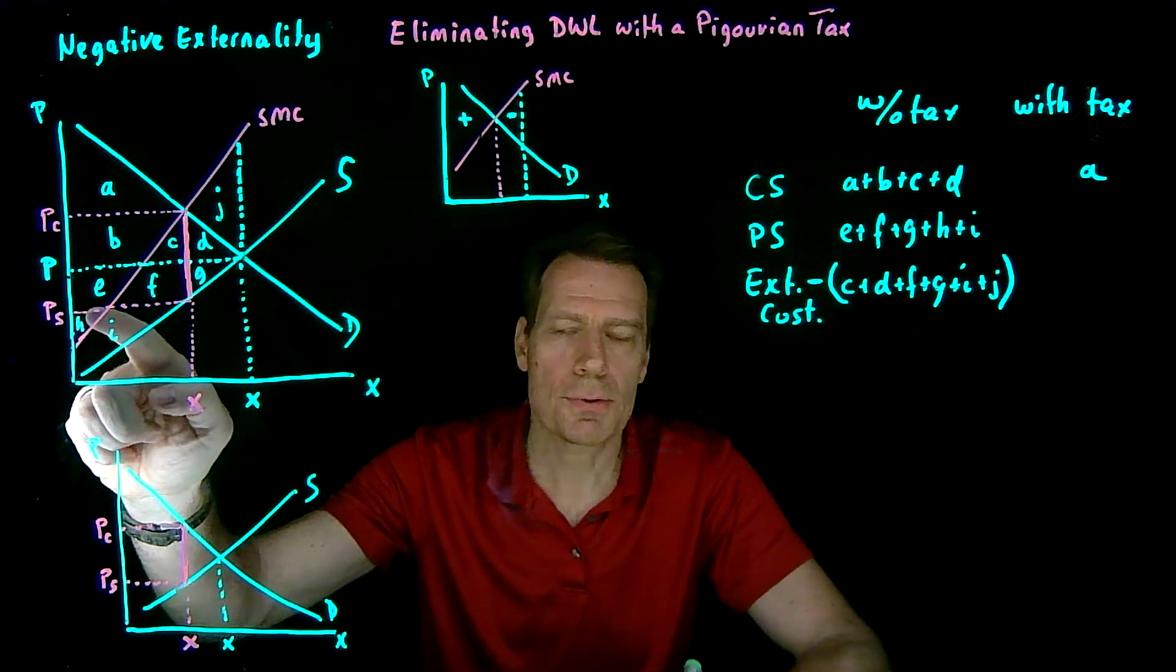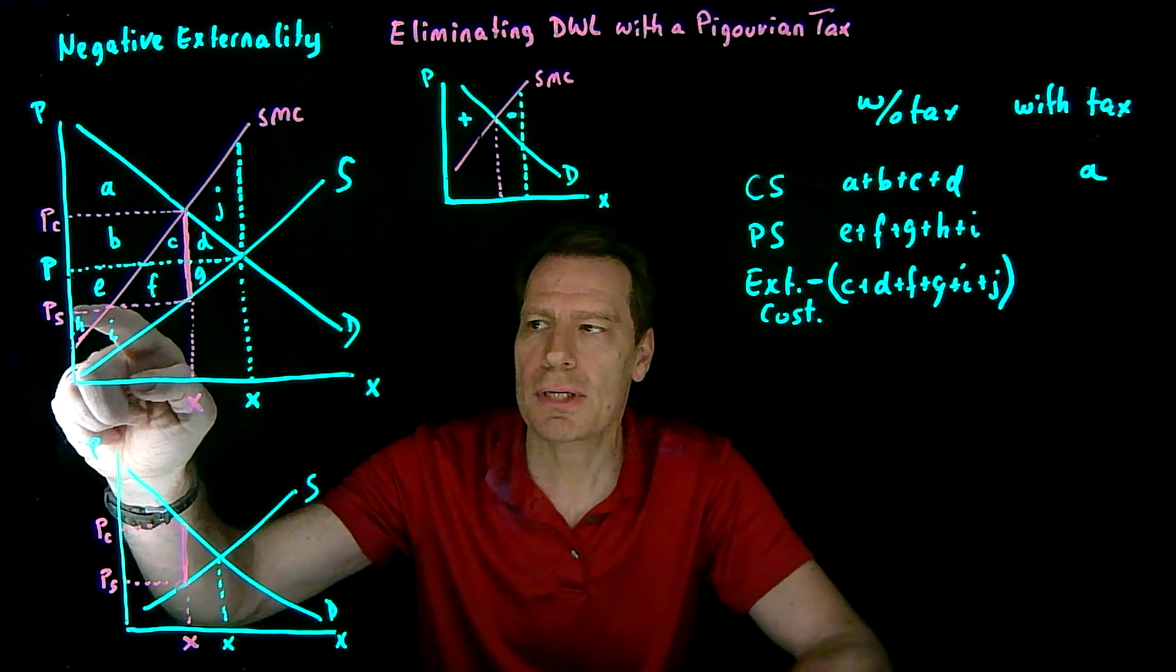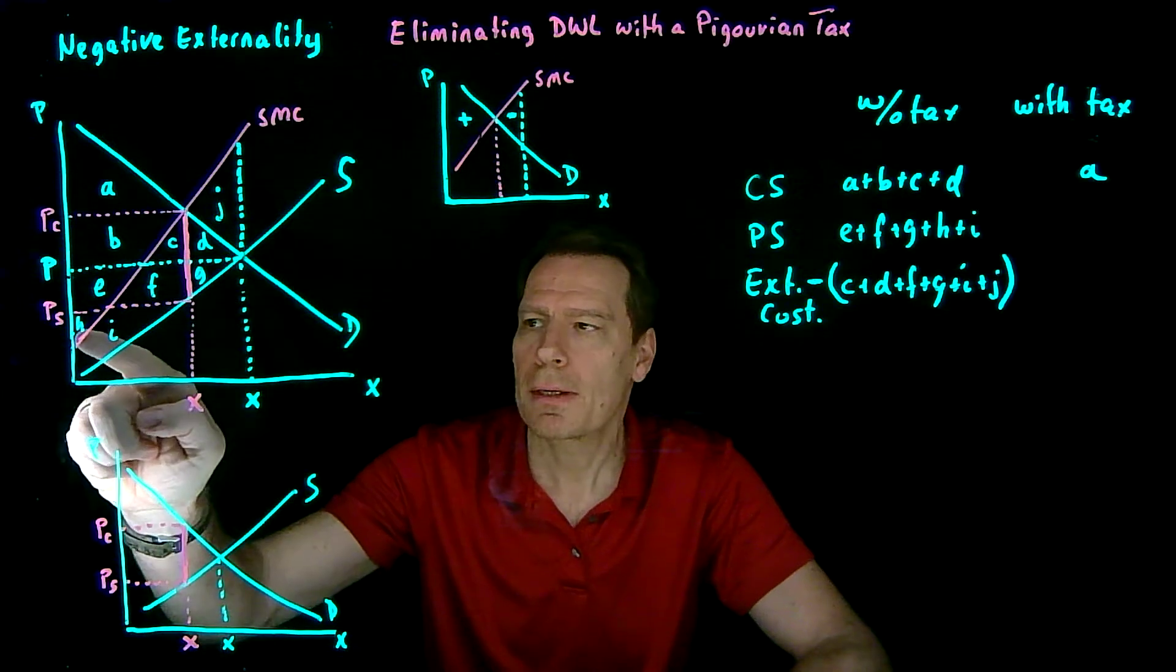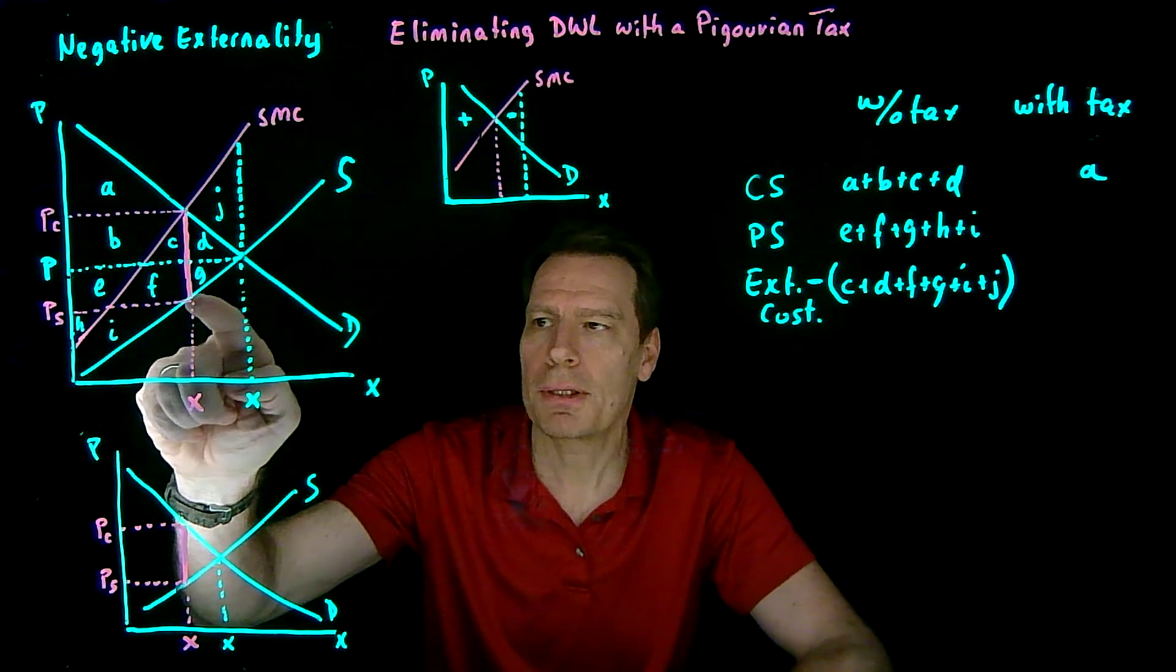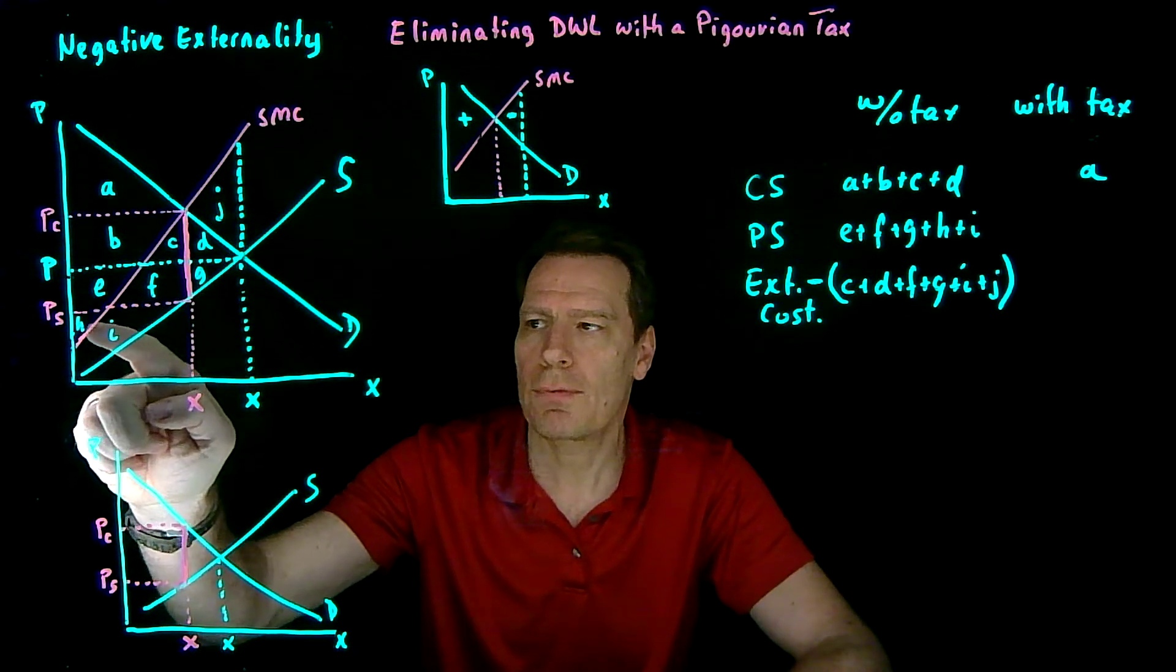Producer surplus is also going to shrink because producers are now selling at that lower price. They only get everything below that price down to the supply curve, H plus I.